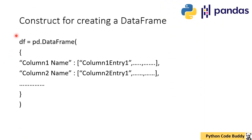Now I will show you the basic construct for creating a Pandas DataFrame. First you write 'df = pd.DataFrame(...)' — pd is the alias for the Pandas object and dot DataFrame is the function construct for creating it. Then you open curly brackets and provide a column name in quotations, followed by a colon, and then the column entries. Similarly you add the next column name and its entries. This is the basic construct, and in the next slide you will see how the full code looks.